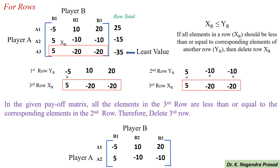After deleting the third row, player A now has only two strategies: A1 and A2. Player B still has three strategies: B1, B2, and B3, as no column has been deleted yet.